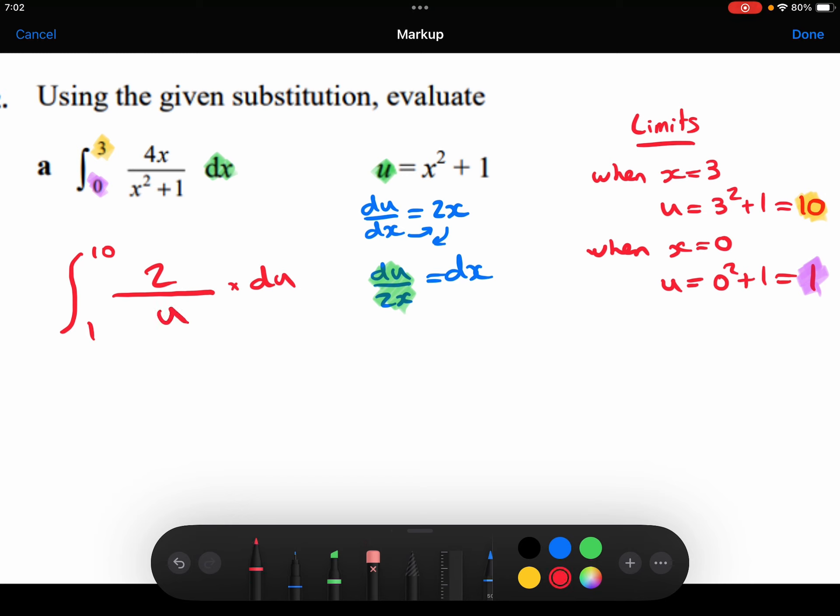So this whole integral has just become 2 over u, which is going to integrate to be 2 ln u.